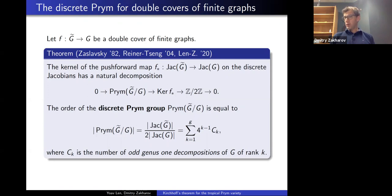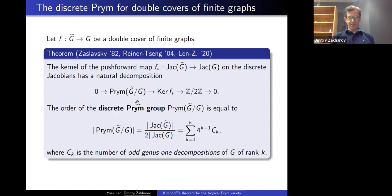The question is: what is the order of this Prym group? We found a formula — already known before, as it turns out. A word of advice: if you ever prove a combinatorics result you think is new, when you post the paper make sure to cross-list it on math.CO. That will save you some possible embarrassment later. Literally the next day after we posted it, Reiner from the University of Minnesota pointed out this result was already known.